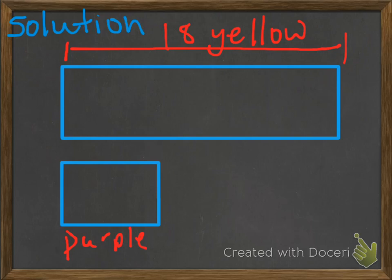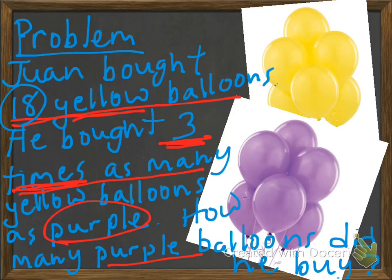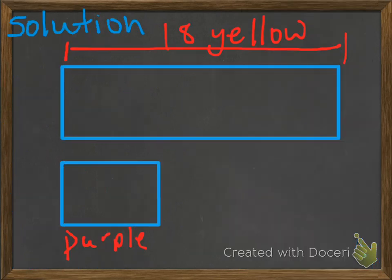And we also know, if we go back, that he got three times as many yellow balloons as purple. And what we can do is divide this into three sections. Why do we do that? Well, we know the total amount, which is up here, 18 yellow. And we know that he also got three times as many. So one, two, three times as many as he did the purple.